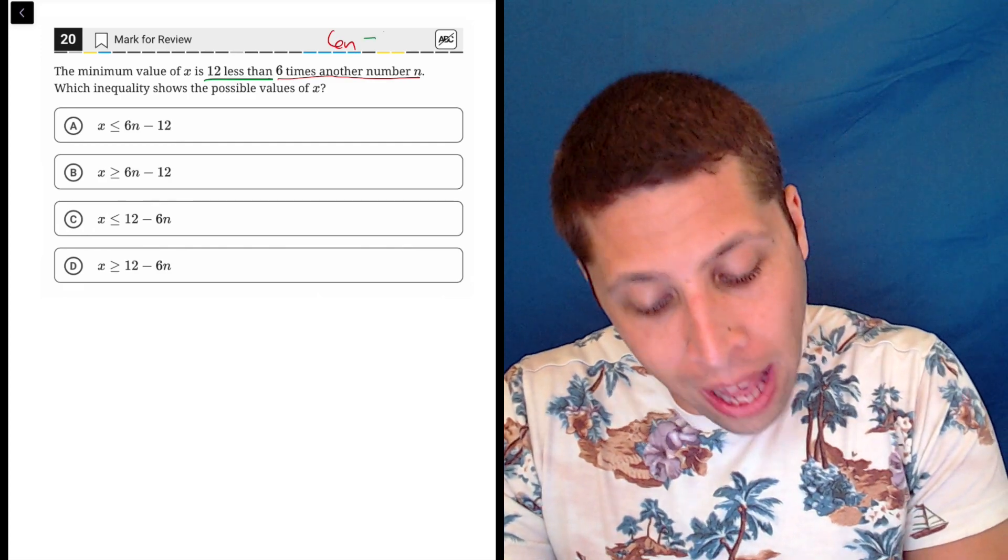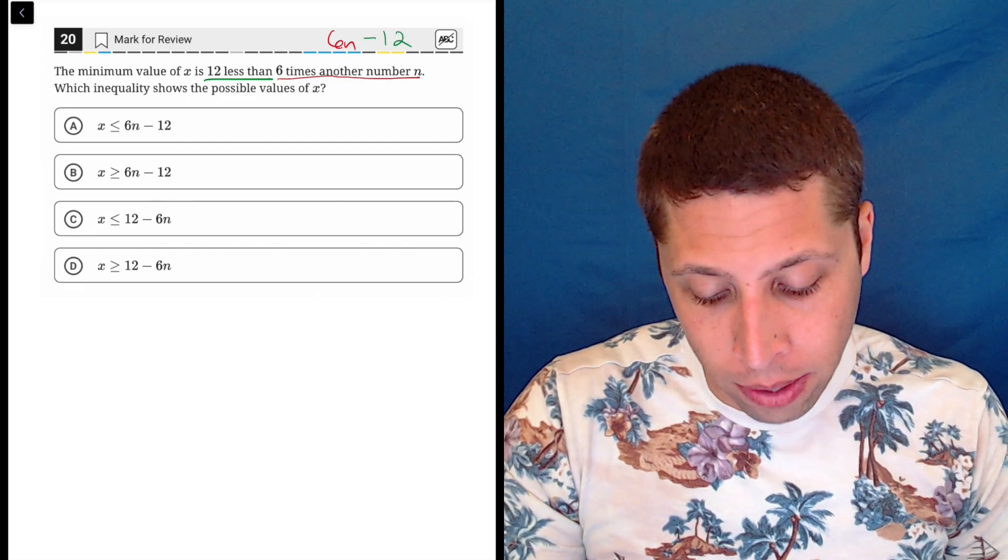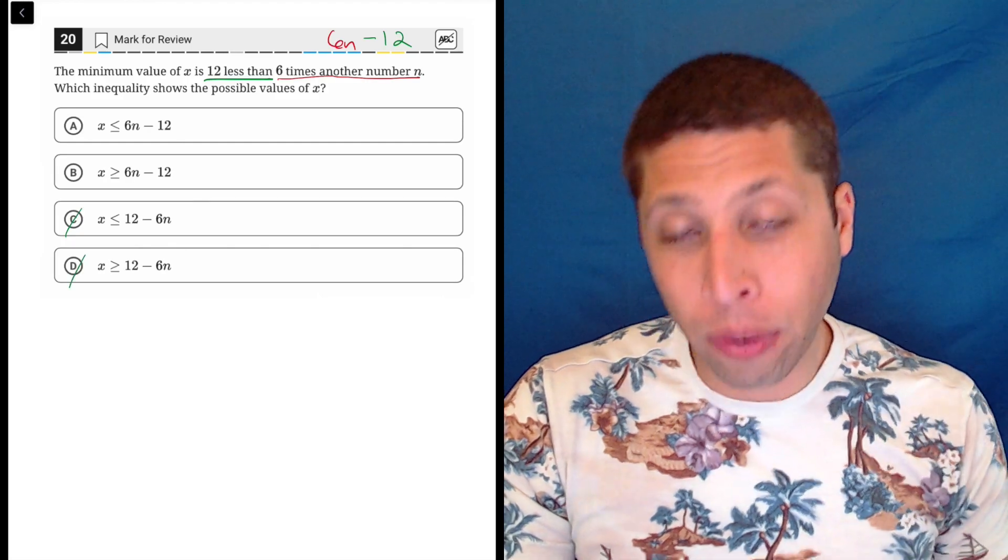So 12 less than this 6n means we're taking the 6n and we're subtracting 12 from it. We're removing 12. So that has to go this way, 6n minus 12. And just like that, now we've avoided the trap answer.